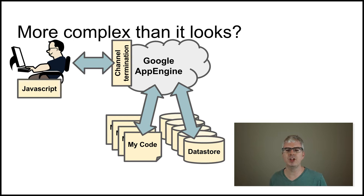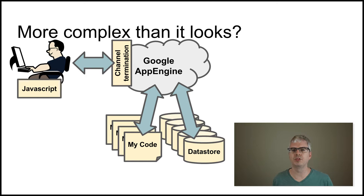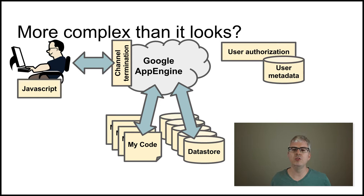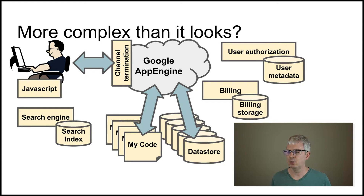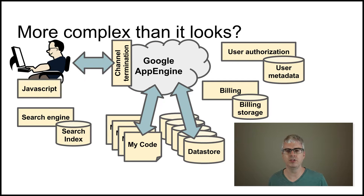This is something which standard HTTP doesn't give you an easy way of doing in a standard configuration. On top of that we're relying on all sorts of other infrastructure: the user authentication infrastructure that Google provides, a search engine that Google provides to allow us to search through our message data, and the billing system. App Engine charges us if we use more than our free quota, and in order to do that charging it needs to keep track of how many requests and how much bandwidth we're consuming.